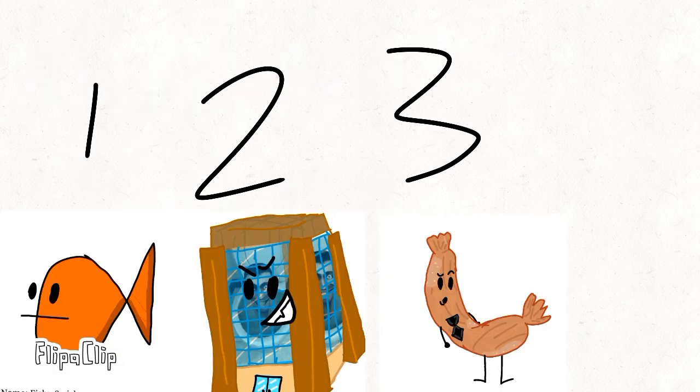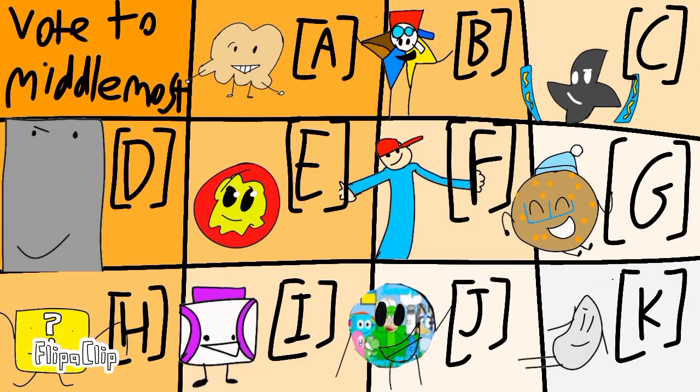The way middlemost votes work is that the person whose votes number is in the middle will be eliminated, so in this case the person with two votes is eliminated and those with one and three are safe.